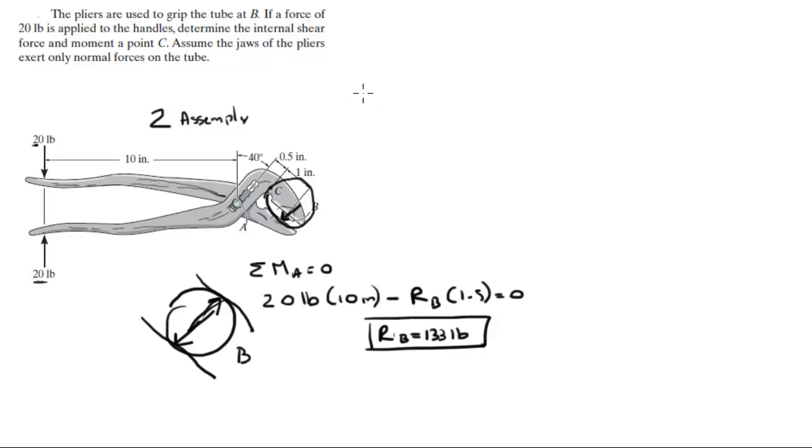And then we're going to use this section right here. This section looks something like this, more or less. This is C. This is a little tube B, which has a reaction going up, which is the one we found over here. This reaction at B we found to be 133 pounds. And this C has a normal, a shear, and a moment.